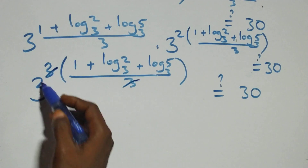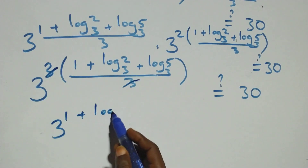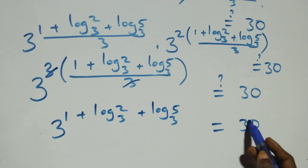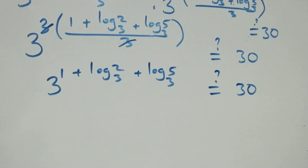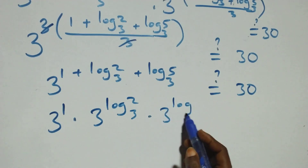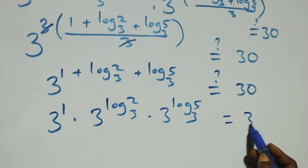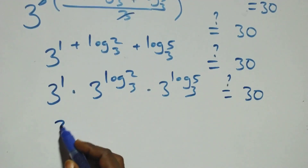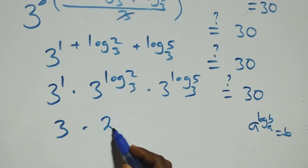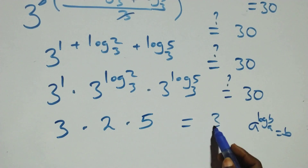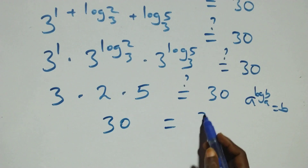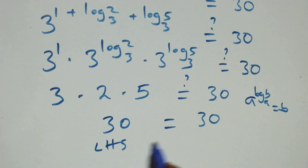Then here the 3 in the power multiplies and cancels, and we have 3 raised to power 1 plus log 2 base 3 plus log 5 base 3, equals 30 on this side. Then here we apply the law of indices and this becomes 3 raised to power 1, times 3 raised to power log 2 base 3, times 3 raised to power log 5 base 3. Now 3 raised to power 1 is 3. Applying the rule a raised to power log base a of b equals b, we get 2 and 5 respectively. So we have 3 times 2 times 5 equals 30, which is 30. Left hand side equals right hand side.